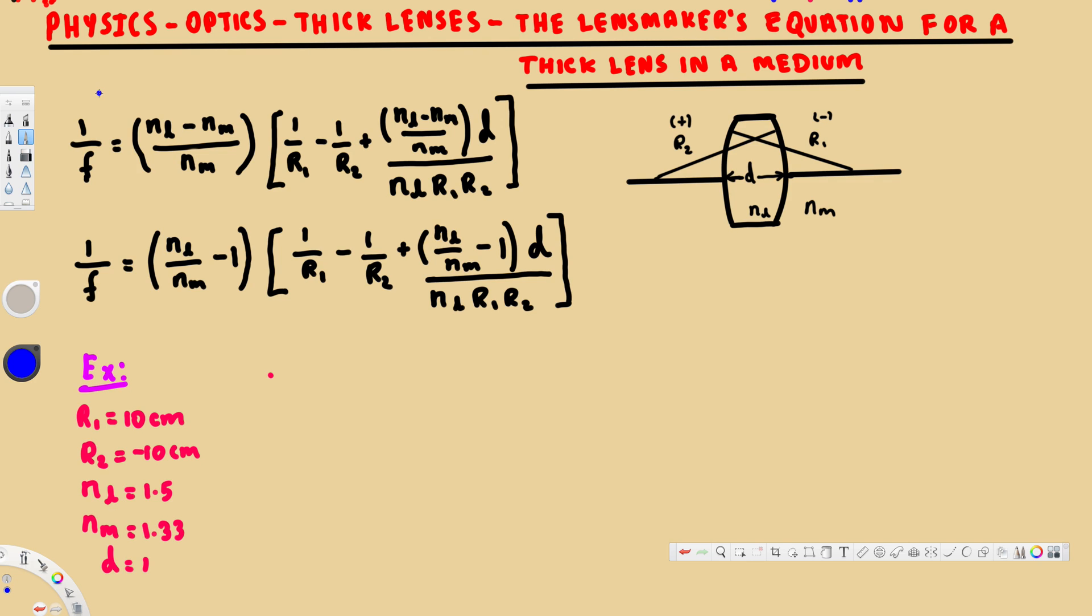In this video, we're going to see an example of the lensmaker's equation for a thick lens in a medium. In my previous video, you'll see that when we have the lens in air, we have this equation with N minus one. But for a medium, it's totally different.